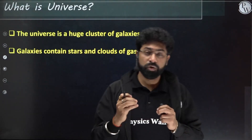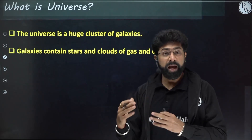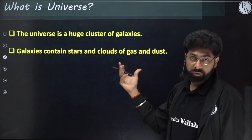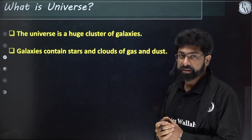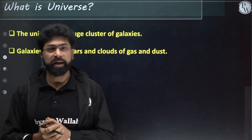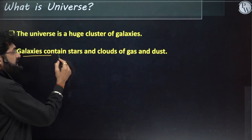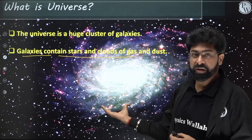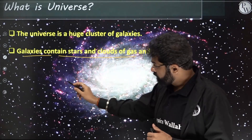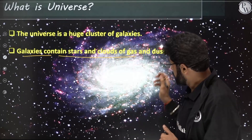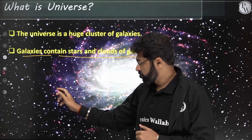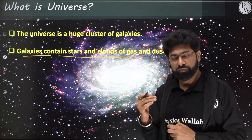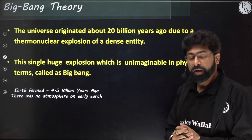When you study evolution, you don't consider it only on earth — you also study what has happened in the universe. The universe is a huge cluster of galaxies; it's not one or two galaxies but billions and billions of galaxies, which contain stars, clouds, gases and dust. Our Milky Way galaxy is shown here, and our earth is just a small speck in it. Our solar system is somewhere in the galaxy — just a dot.